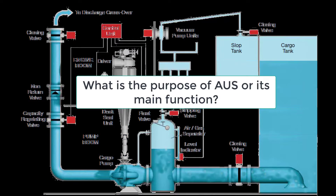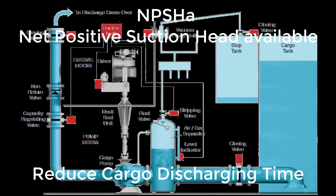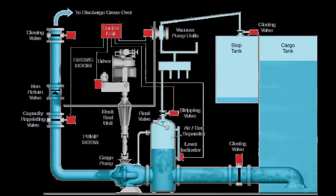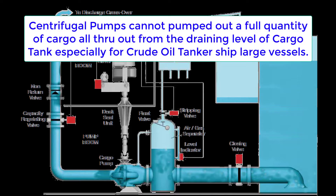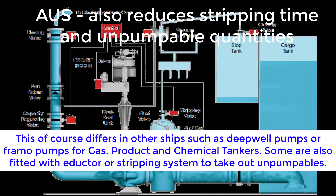What is the purpose of AUS or automatic unloading system? The purpose is to reduce cargo discharge time and to protect the pumps. When we talk about net positive suction head — when the available NPSH becomes low, wherein the suction side pressure is lower than the vapor pressure within the cargo tanks — it creates bubbles. A centrifugal type pump cannot actually discharge the full cargo volume of a tank; eventually it loses suction and cavitation takes place, leaving some unpumpable quantities. Thus, the AUS optimizes the cargo pumps to their maximum performance before stripping of cargo tanks takes place, reducing stripping time and unpumpable quantities.